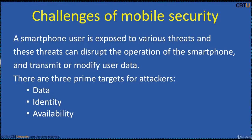There are three prime targets for the attackers. Data — sensitive information like credit card numbers, authentication information, private information, logs, etc. Identity — the attacker may steal the identity of the owner to commit offenses. Availability — attacking the smartphone can limit the access to it and deprive the owner of its use.